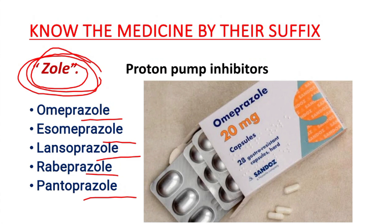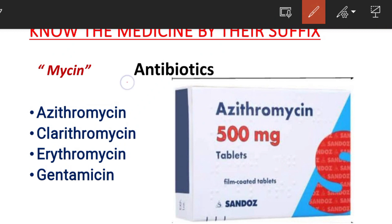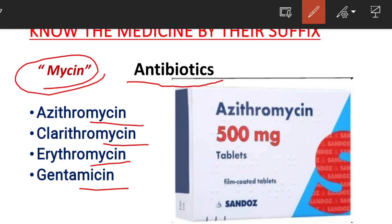One group of drugs uses the suffix '-mycin'. These are antibiotic medications. Examples include Azithromycin, Clarithromycin, Erythromycin, and Gentamicin. The common suffix '-mycin' is an indication that the drug belongs to the antibiotic medication group.